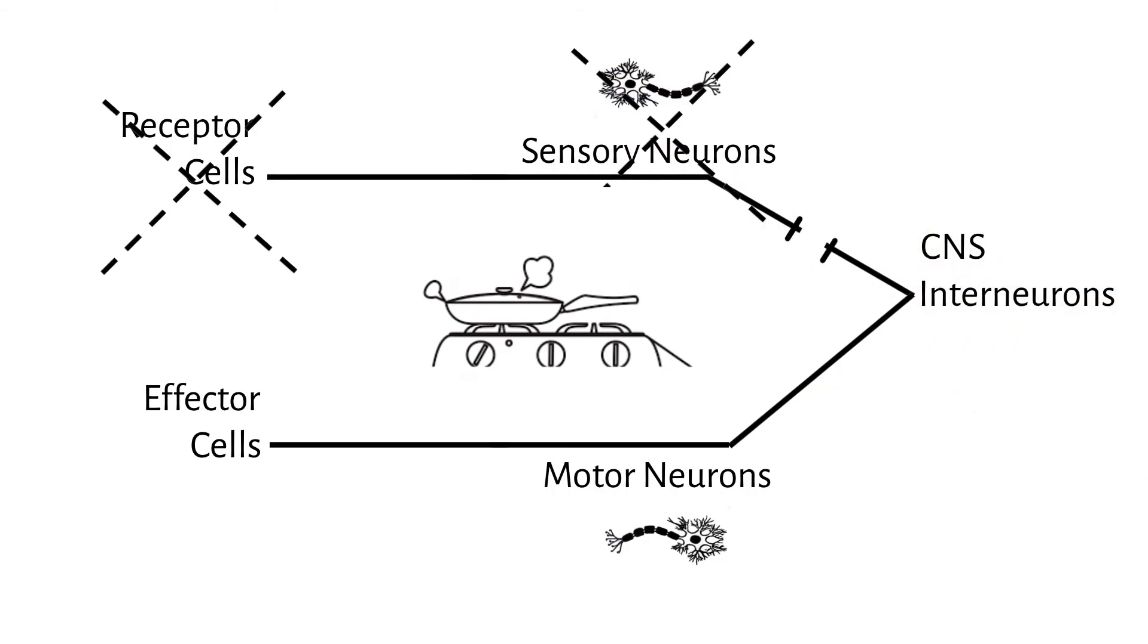You wouldn't move your hand until you noticed some other way, such as you saw your hand burning or someone told you. That is, as long as the sensory neurons in your eyes or ears were working properly.